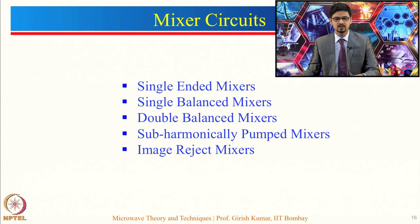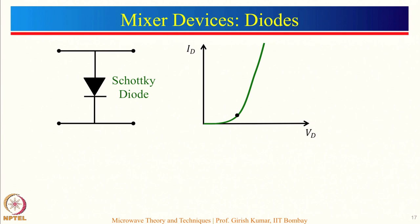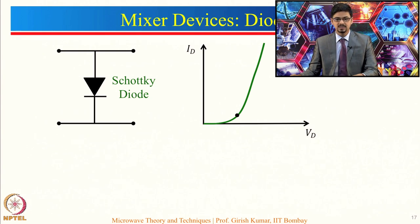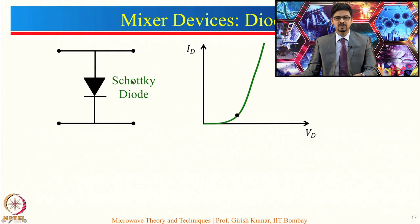Before going to these circuits, let us first understand the mixer devices. First is the diode. Unlike in most operations, a PN junction diode is never used in mixing action, because PN junction diodes have very long carrier recombination lifetimes, which is undesired for mixers, because mixers have to be switched very fast. For that we need very low carrier recombination lifetime, which is given by Schottky diodes, which are unipolar or majority carrier devices. So in most mixers we use Schottky diodes and avoid PN junction diodes.